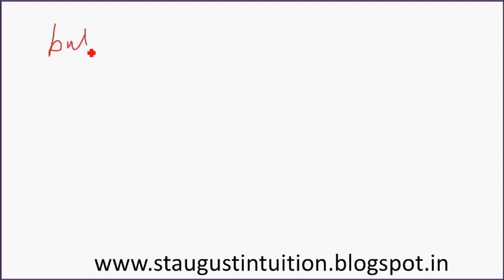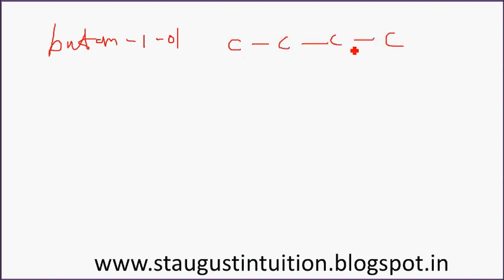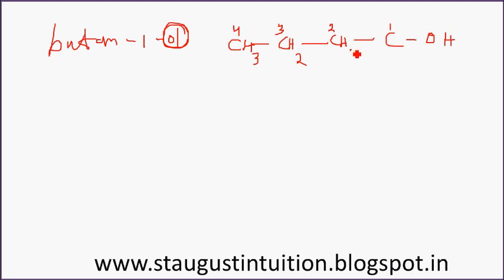Butan-1-ol. It has 1, 2, 3, 4 carbons. The suffix '-ol' means OH group, so OH is at position 1. Carbon positions: 1, 2, 3, 4, 5. OH means position 1. This is hydrogen — if you have a bond, you get 3 hydrogens: CH3. If you have 2 bonds, you get 2 hydrogens: CH2. This is butan-1-ol.